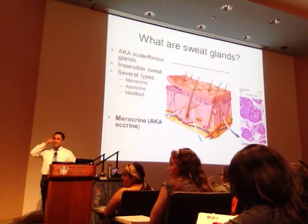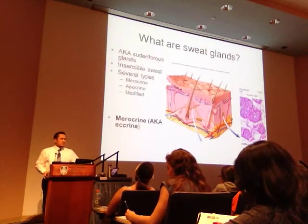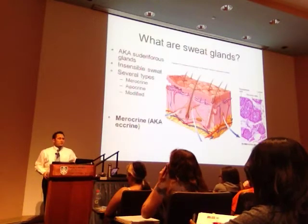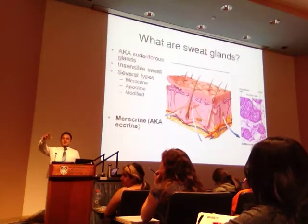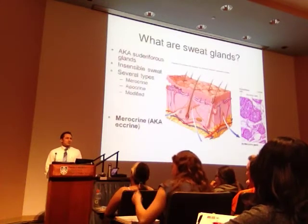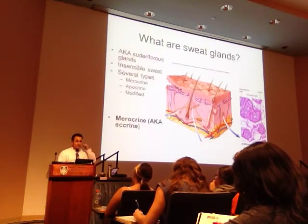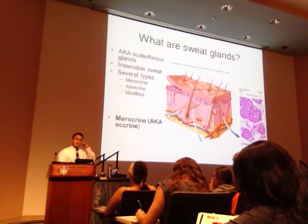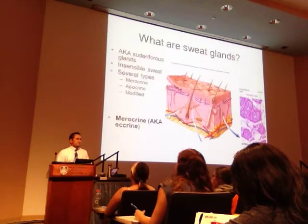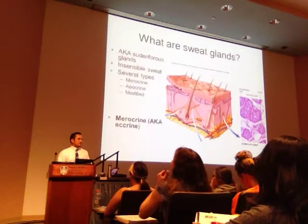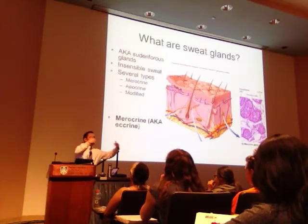Where does sweat come from? Blood. Sweat is blood filtrate — it comes out of the vasculature. It's like urine, cerebrospinal fluid, and lymph — all blood filtrate. The vasculature that perfuses the dermis perfuses the sweat gland, which acts as a filter. It filters out red blood cells, so you don't see blood coming out. But there are medical situations where you can actually rupture the sweat gland and sweat blood — documented to occur under extreme conditions of stress.